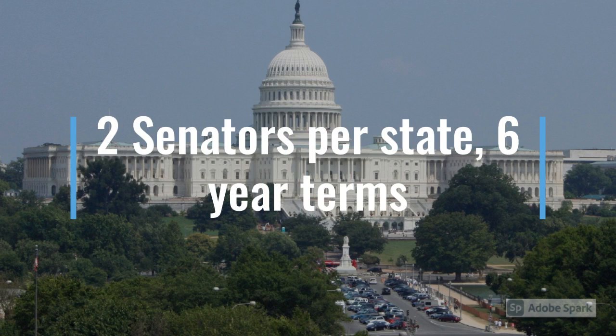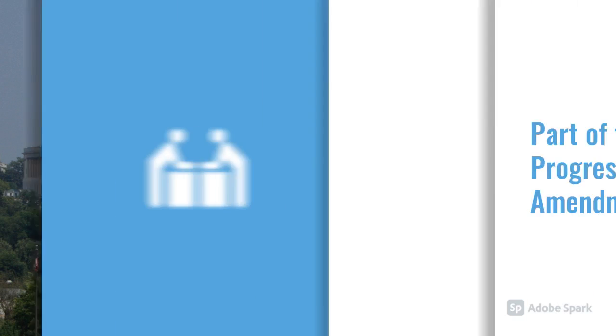Simply stated, this amendment changed the process of electing senators, taking it out of the hands of state legislatures and placing it into the hands of voters in each state. Each state is granted two senators who serve six-year terms.